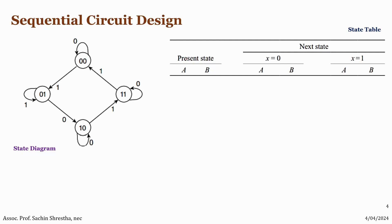Hello everyone. In our last part we discussed about the state diagram and state table. Now in this part we will be designing a sequential circuit for the given state diagram. First we need to define the state table based on this state diagram. We have already discussed how we can generate a state table based on the given state diagram, so let's state it accordingly.